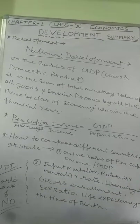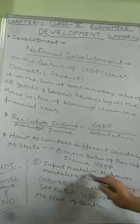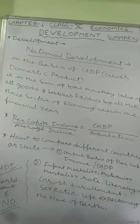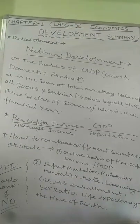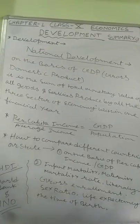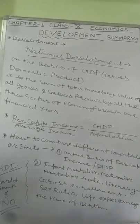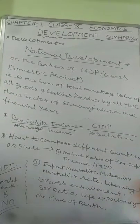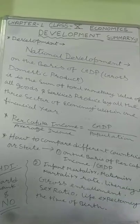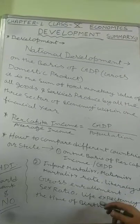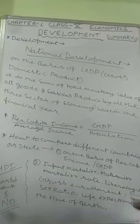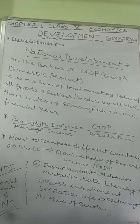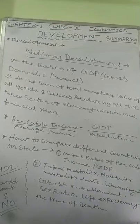There are other important indicators such as: infant mortality rate, maternity mortality rate, literacy rate, gross enrollment rate (i.e., the gross enrollment ratio of children in schools), sex ratio, life expectancy at the time of birth — which we call Jeevan Pratyasha, i.e., average age. All of these should be better.